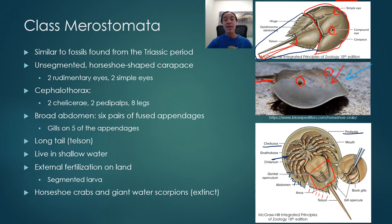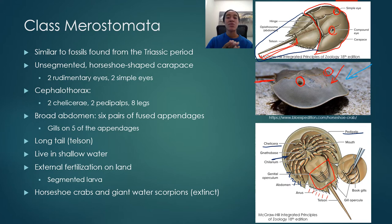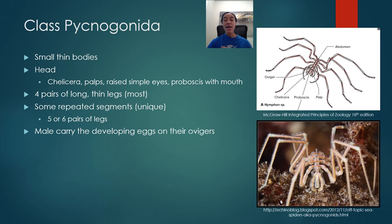The larvae of horseshoe crabs are segmented, indicating their segmented ancestor. Horseshoe crabs are not the only organism within this group - just the only extant one. There was an extinct species within this group called the giant water scorpion. Horseshoe crabs are really the only extant species we know of that fits within this class.